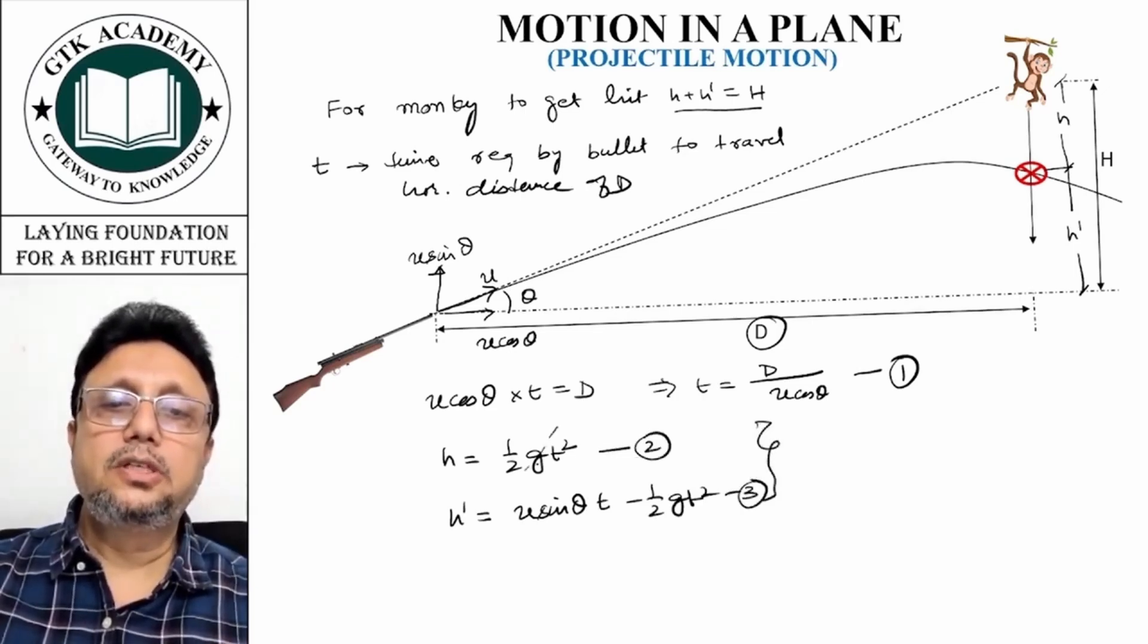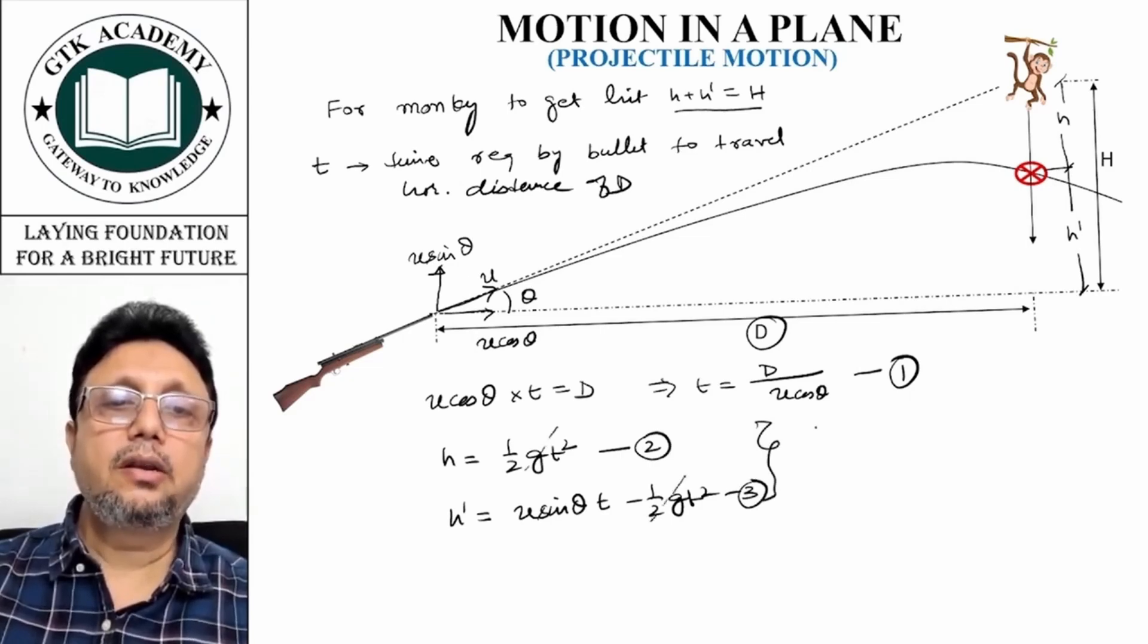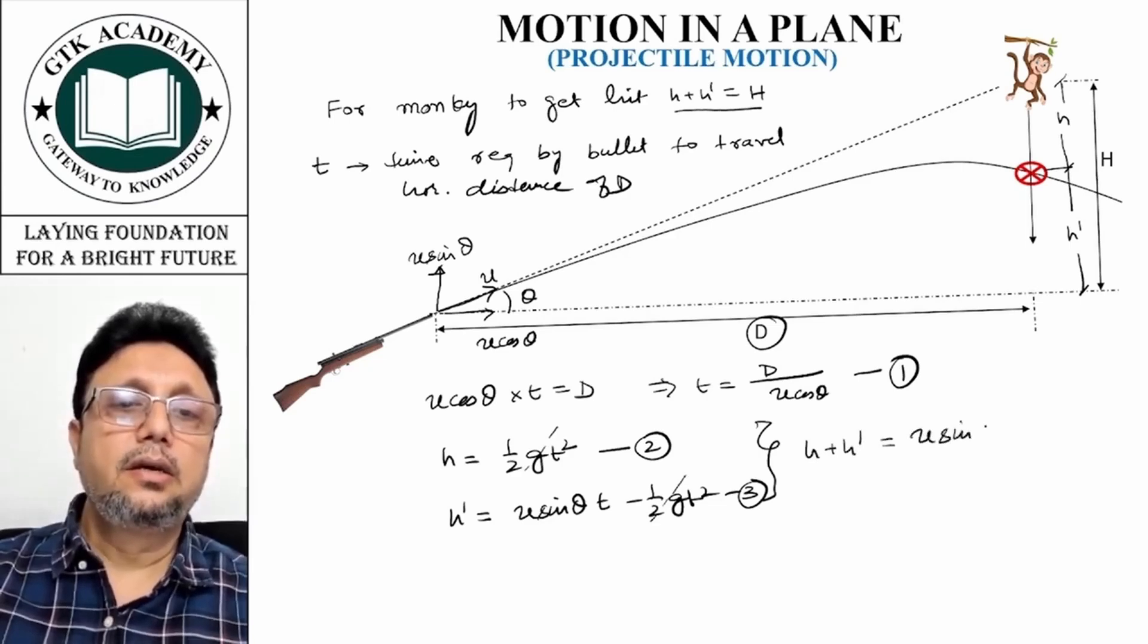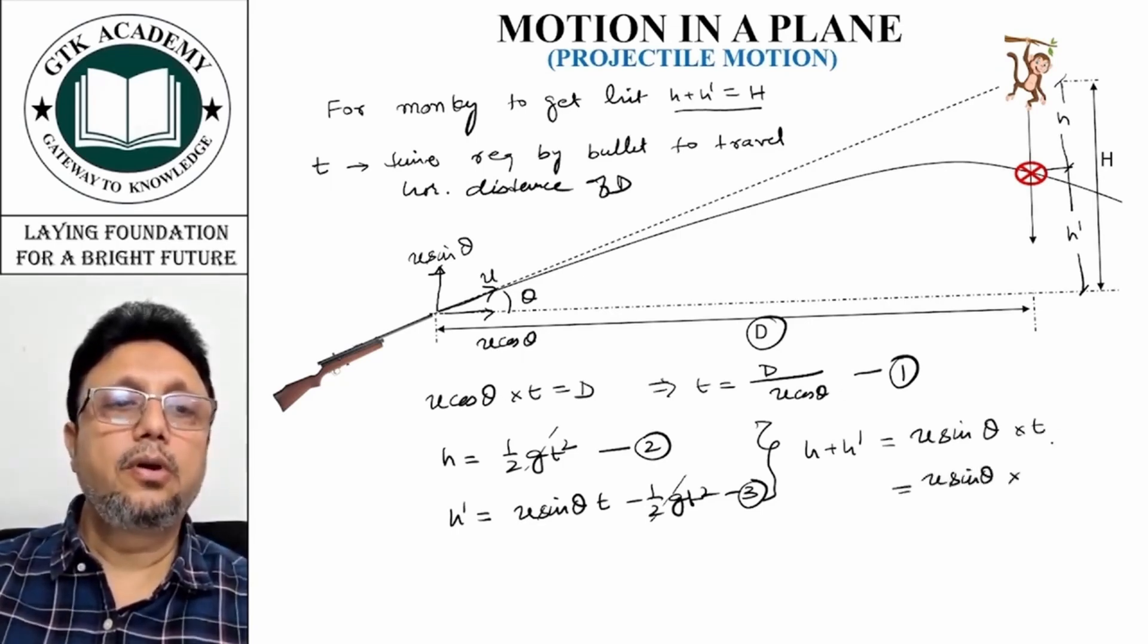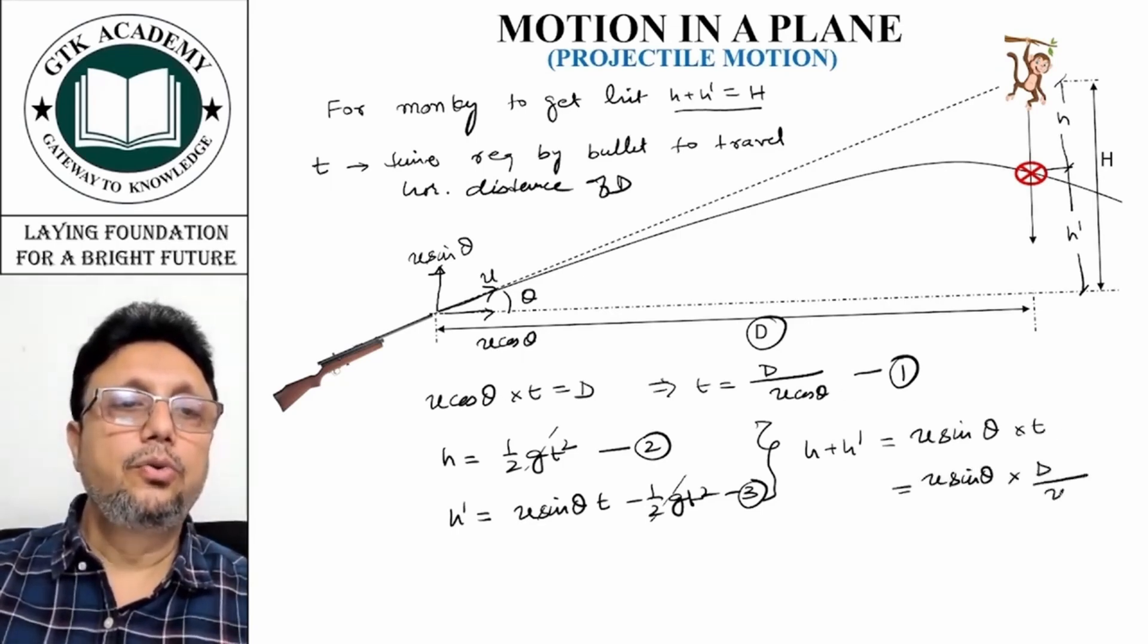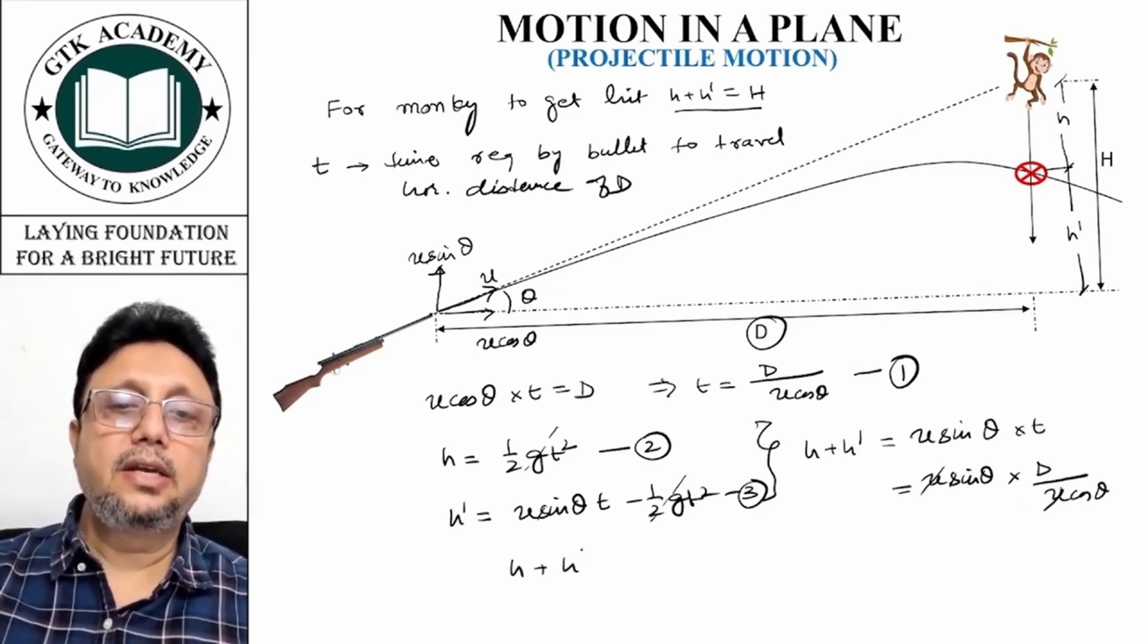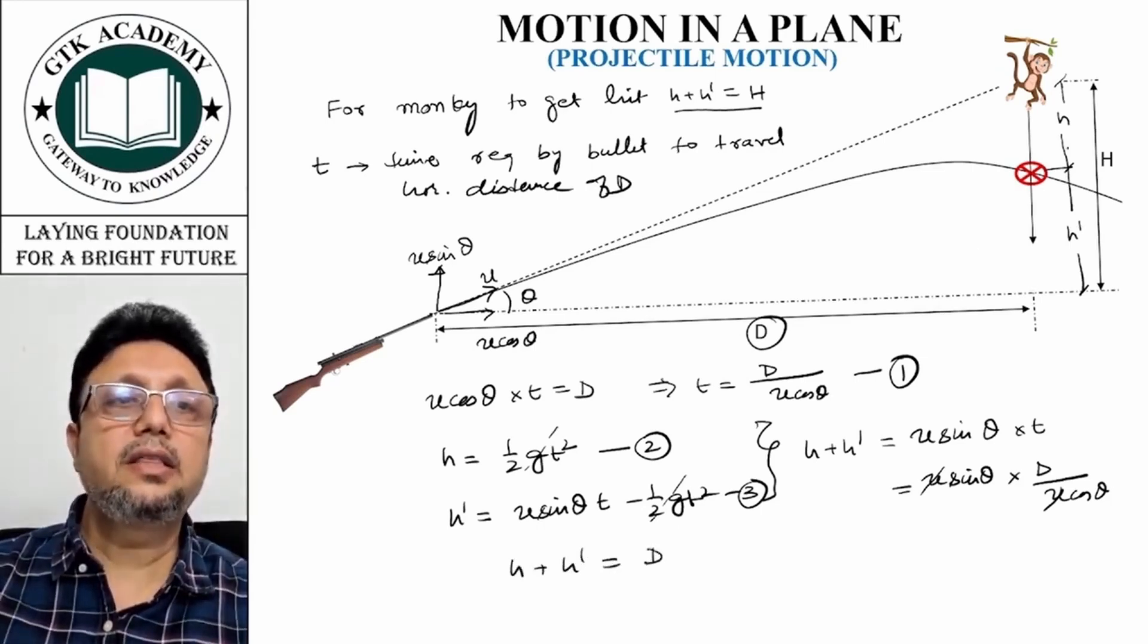So h plus h dash is equal to u sine theta into t. And u sine theta into t is d upon u cos theta. So h plus h dash is equal to d into tan theta.